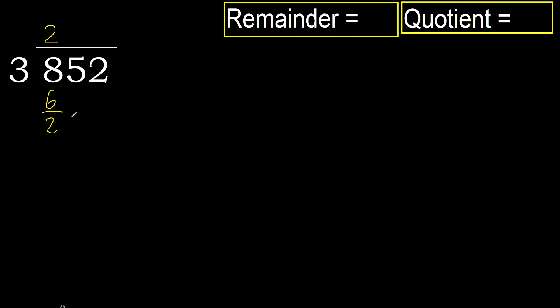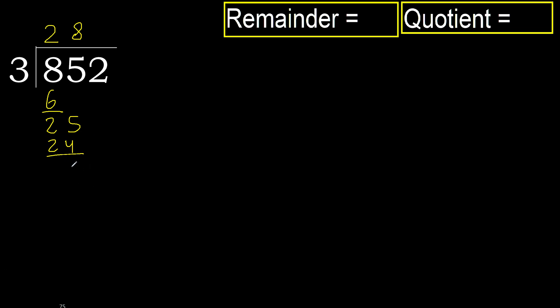Next: 25. 3 multiplied by 9 is 27 — that is greater. 3 multiplied by 8 is 24 — it is not greater. Ok, subtract. Remainder: 1.